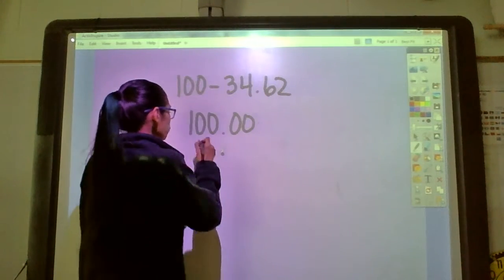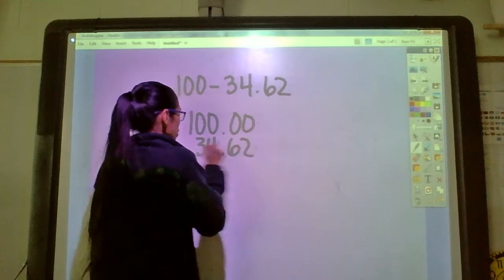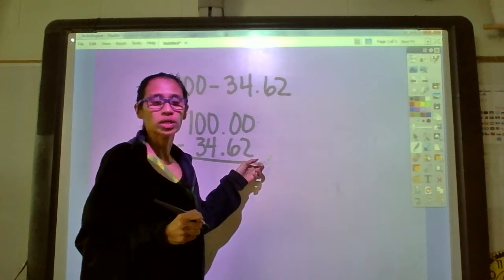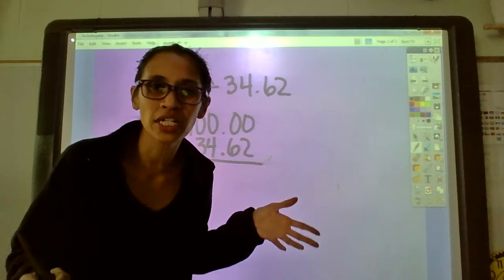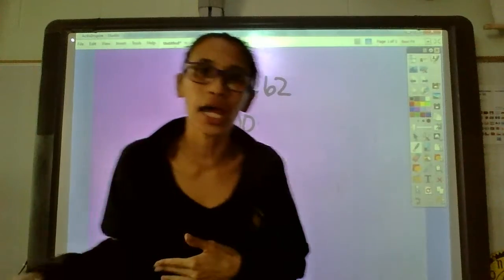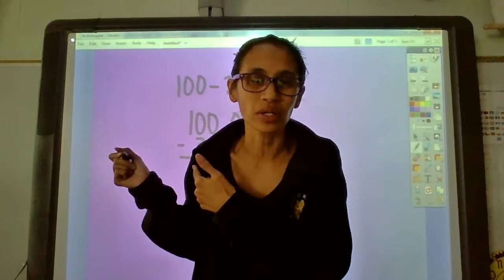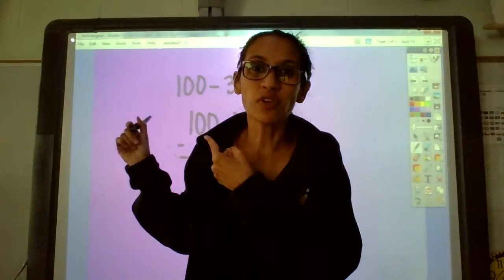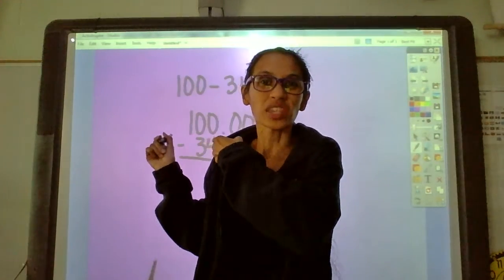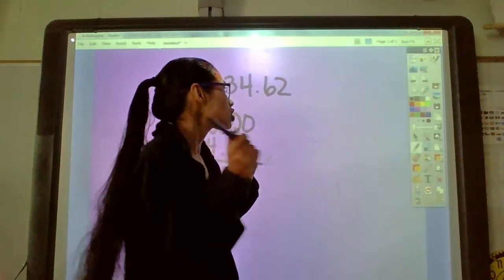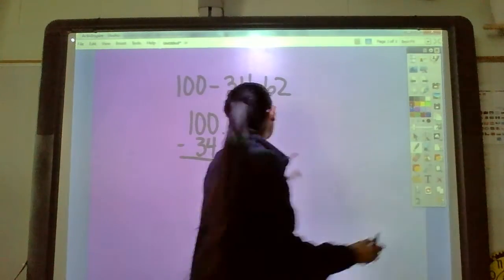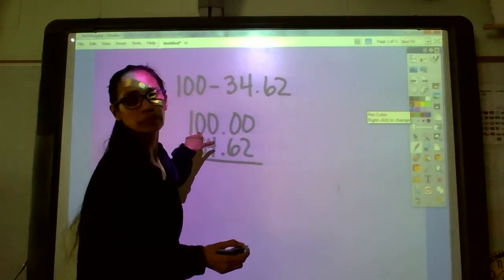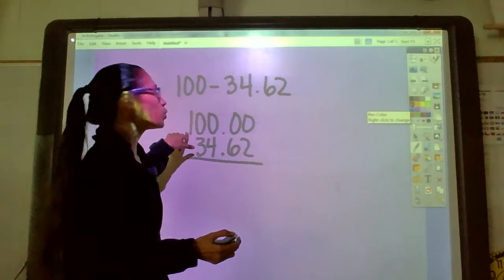We're going to subtract. Zero take away two, can't do it. Oh my gosh, look at this, so many zeros that always like to hang out all the time and now they're broke, they have nothing. You can't take away but guess what? They have a friend they can borrow something from. Let's borrow. Can't borrow from that friend, can't borrow from that friend either, can't borrow from that friend.